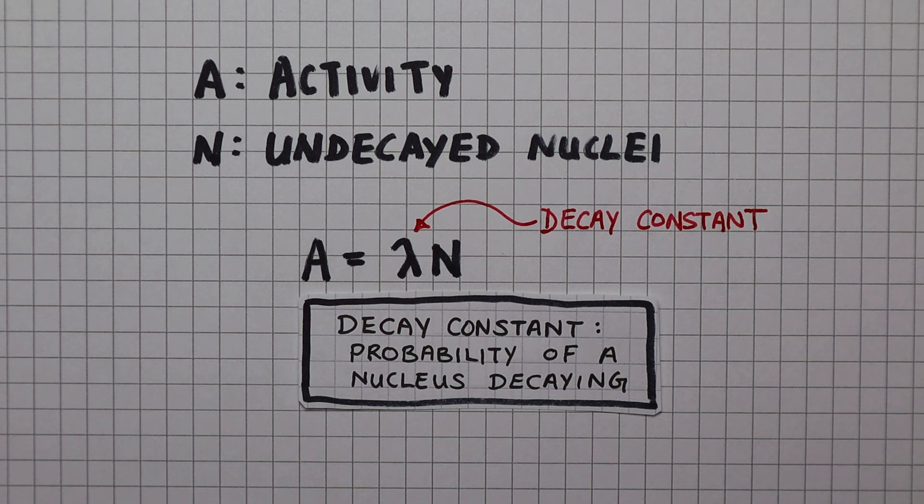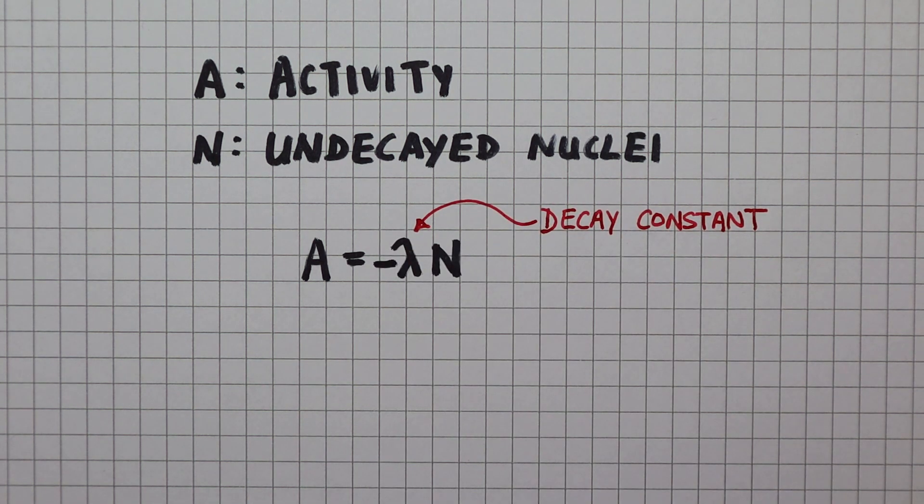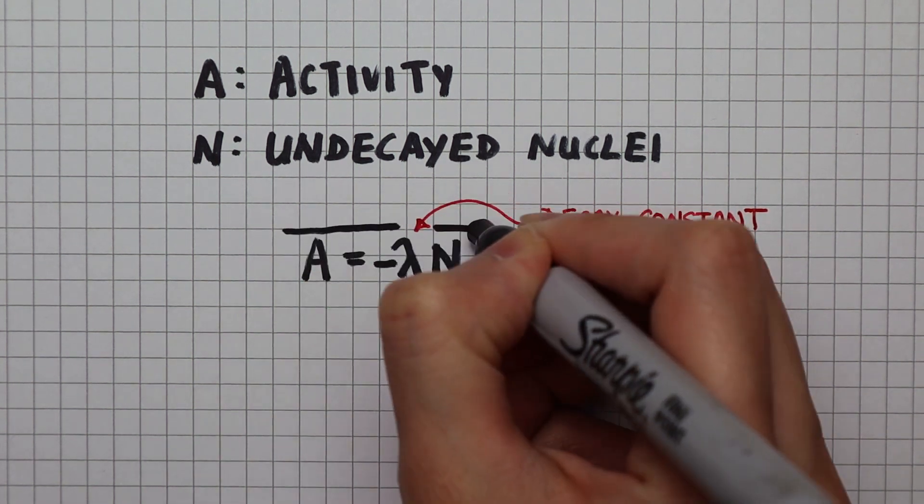To acknowledge the fact that the number of radioactive nuclei is actually decreasing, we need to put a minus sign in front. So here's the first equation for radioactivity.